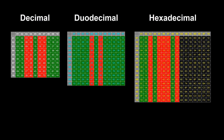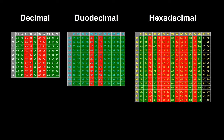In hexadecimal there is no easy way to remember the 9, 10 or 11 times tables. The 14 times table has a repeating pattern of E, C, A, 8, 6, 4, 2, 0. The 15 times table is easy because the last digit counts down and the first digit counts up. The 16 times table is easy because the last digit is always zero and the first digit counts up in ones.